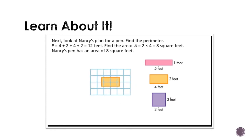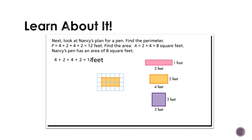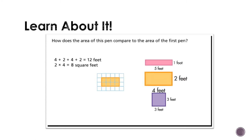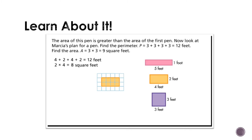Next, look at Nancy's plan for a pen. Find the perimeter: P equals 4 plus 2 plus 4 plus 2 equals 12 feet. Find the area: A equals 2 times 4 equals 8 square feet. Nancy's pen has an area of 8 square feet. How does the area of this pen compare to the area of the first pen? The area of this pen is greater than the area of the first pen.